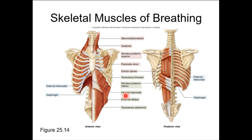When we go for a run and need to increase the volume we're ventilating and the amount of oxygen we're getting, we start to use some of our accessory muscles of breathing — skeletal muscles such as your intercostal muscles or some of your serratus muscles, and in some cases even your scalenes.